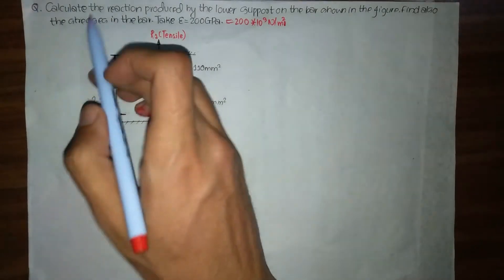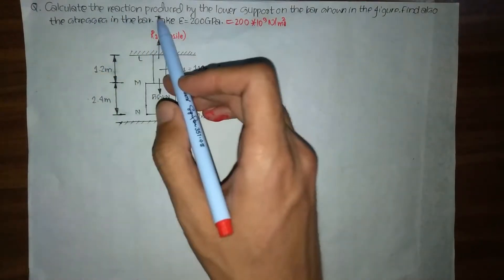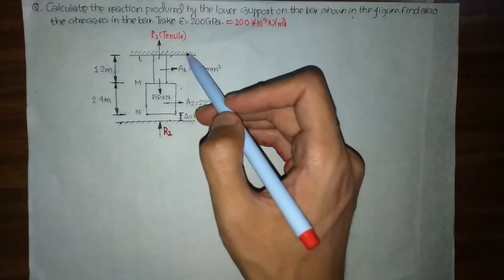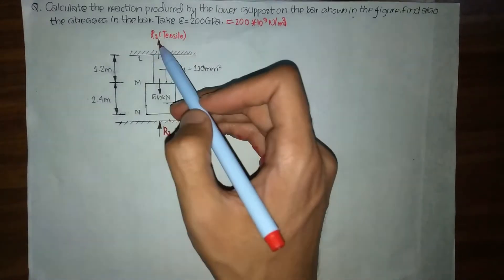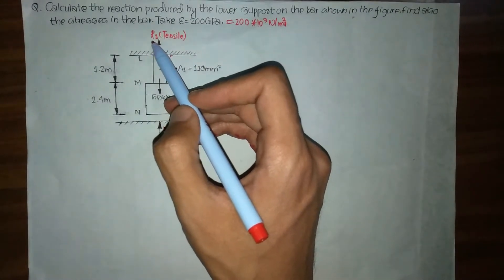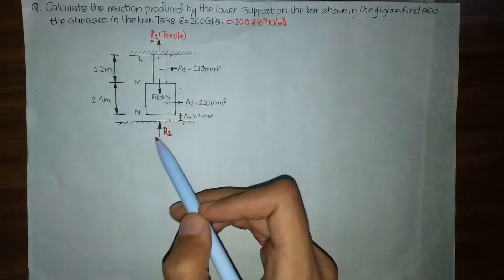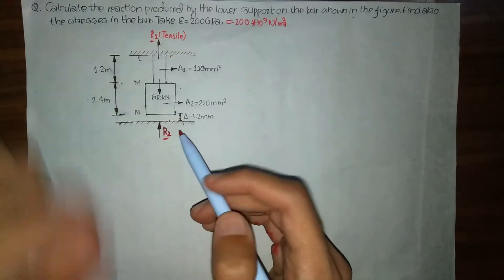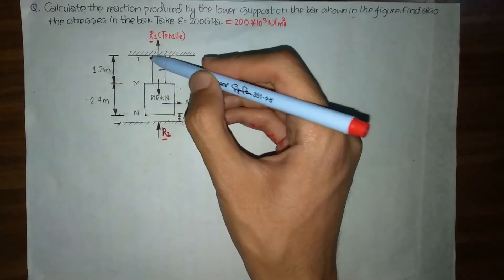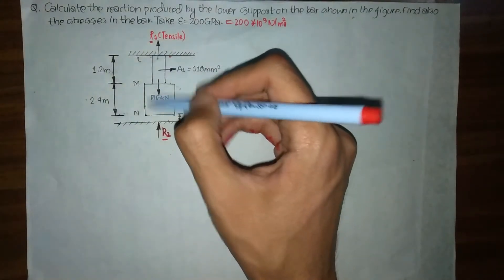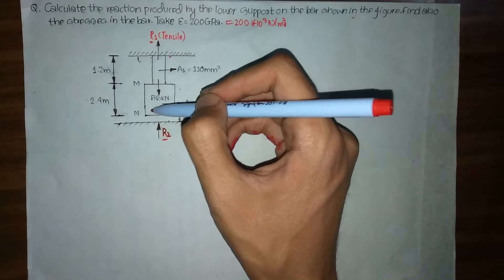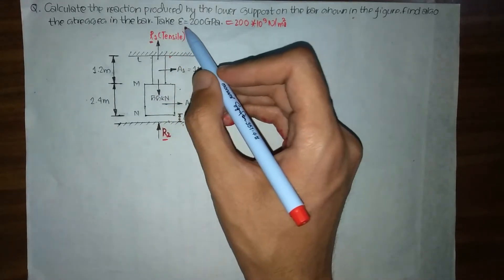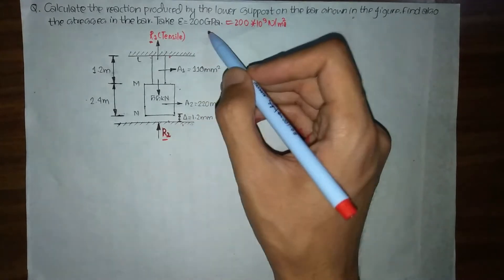What our question tells us is to calculate the reaction produced by the lower support on the bar shown in the figure. We have the upper support with reaction R1 and the lower support reaction R2. We also need to find the stress in the bar, which consists of two sections LM and MN, and we have Young's modulus E equals 200 gigapascals.